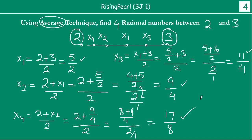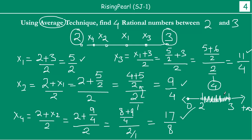As you will recall, between 2 and 3 on the number line — with plus infinity on one side and 0 on the other — there are actually infinitely many rational numbers and irrational numbers. Using the average technique, we have found only 4 rational numbers between 2 and 3. If you need 5, 6, or 10 numbers, you just continue the mechanism of taking averages to find as many numbers as exist between 2 and 3.